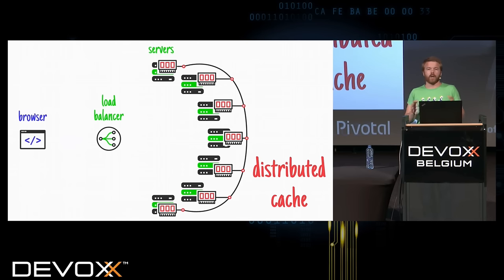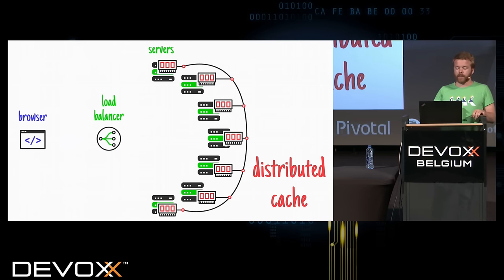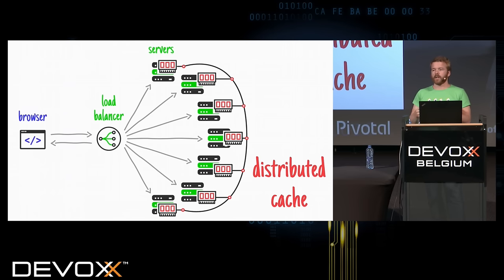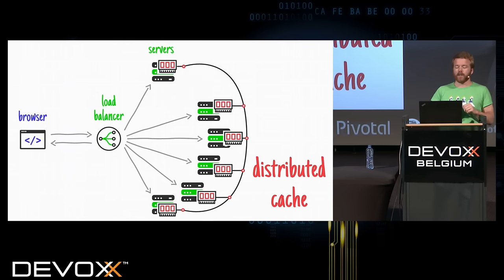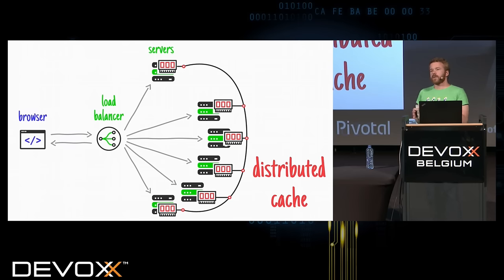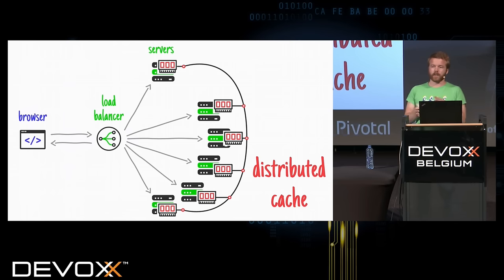We set it up, and whatever node the load balancer chooses, every node knows about every session. If a node fails, some users may be disconnected, but the site isn't down — so it's not that much of a problem. I've worked with many clients. At some clients, this was easy — it works on my machine, I go to the ops team, EHcache, Memcached, no problem, tomorrow it's fixed.